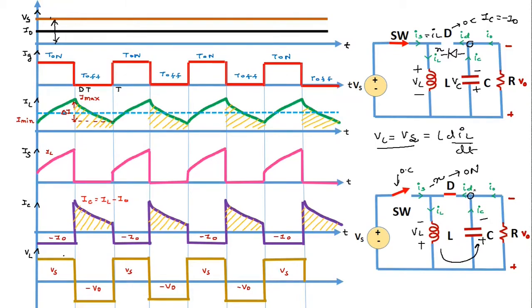Applying KCL at the node during the OFF period: I_naught plus IC minus IL equals zero, so IC equals IL minus I_naught. This gives the waveform for capacitor current IC during the OFF period. The inductor voltage VL during the OFF period equals minus V_naught.